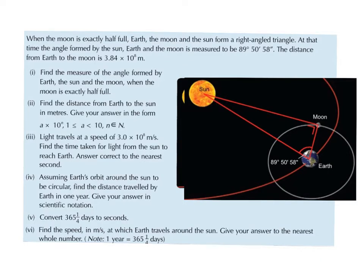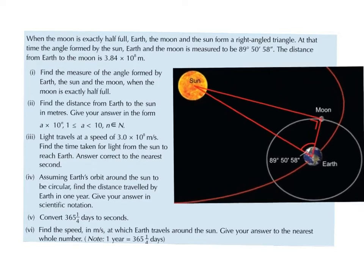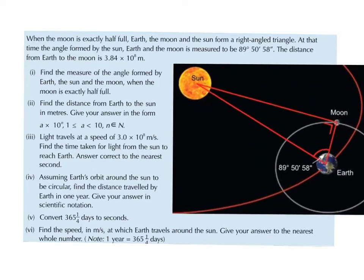Today we're going to take a look at this question. When the moon is exactly half full, the earth, the moon, and the sun form a right angle triangle. So when we look up and see a half moon, it means the sun, the moon, and the earth are forming a right angle triangle at that time.